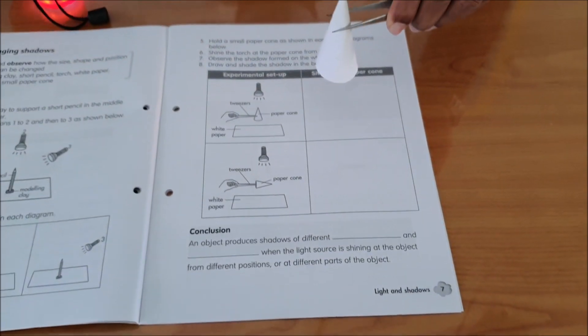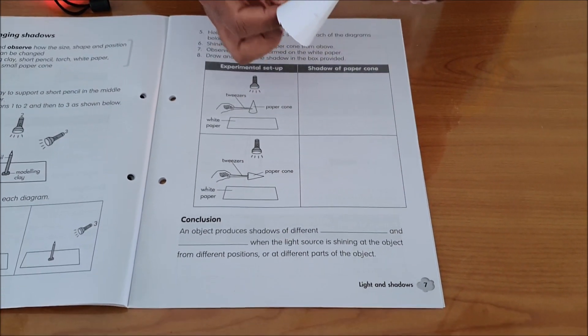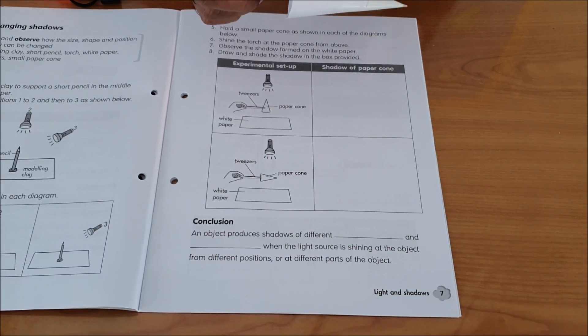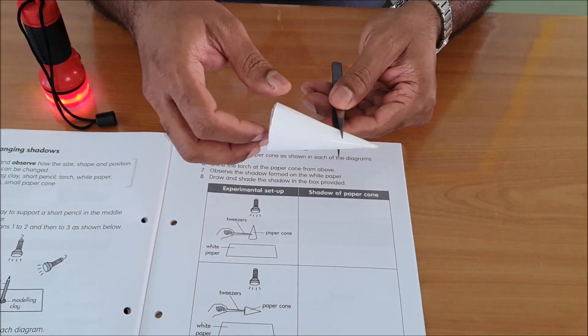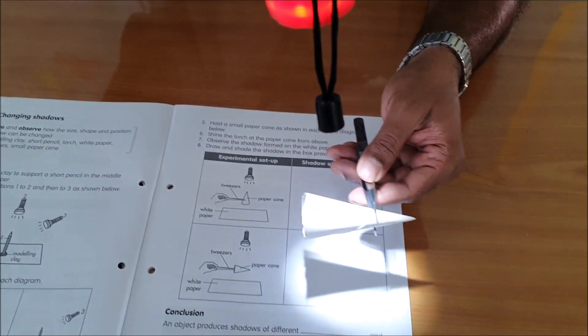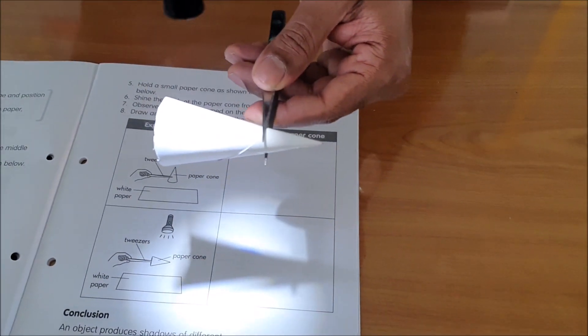Then after that, I am going to turn the cone and I am going to shine the light from the side. How does it look like?